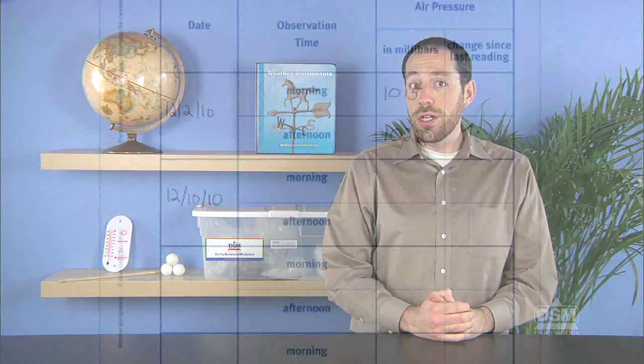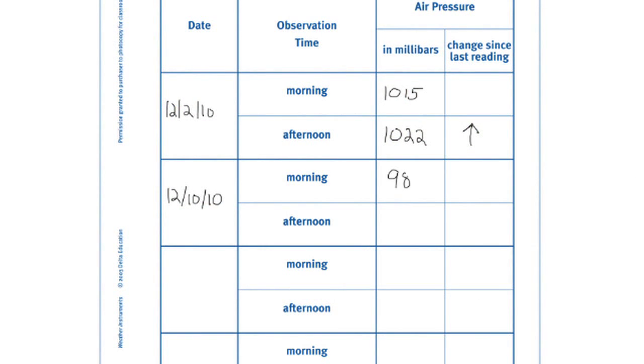Note that the last column of the sheet will be used for recording the direction of change since the last reading. If the air pressure reading is higher than the previous reading, draw an arrow pointing up. If it is lower than the previous reading, draw an arrow pointing down. If the air pressure has not changed, draw an arrow pointing to the right.